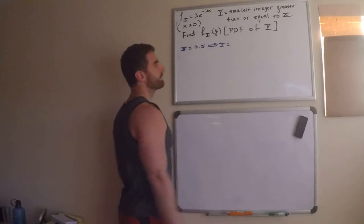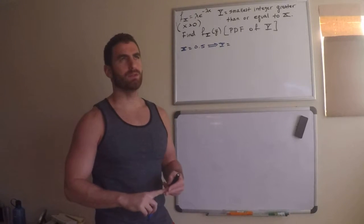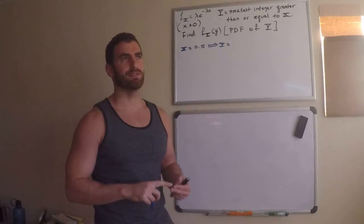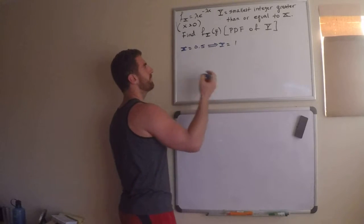y is equal to the smallest integer greater than or equal to 0.5. Well, 0.5 is not an integer. It has to be greater than that. It must be 1.